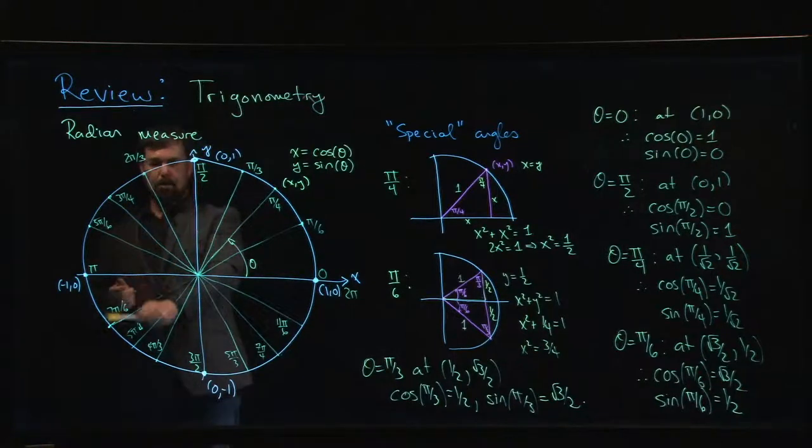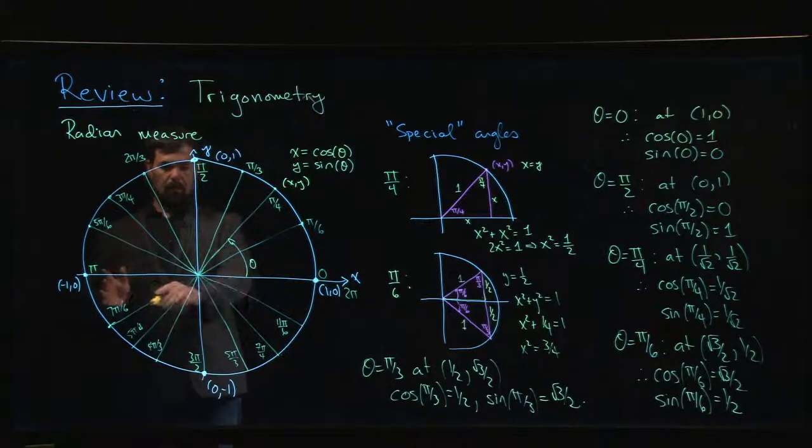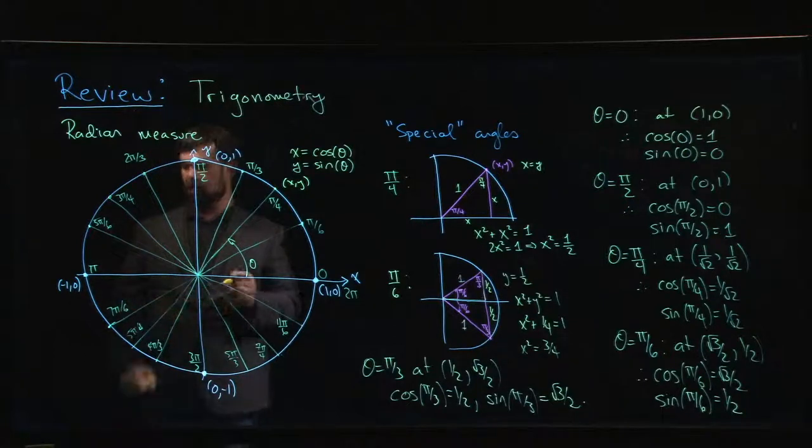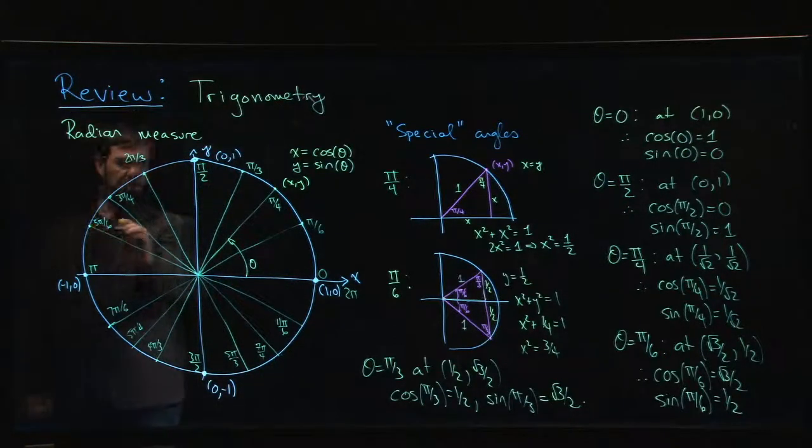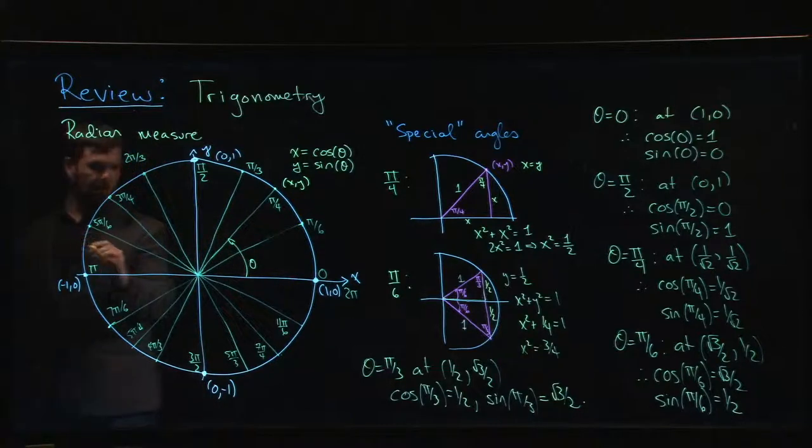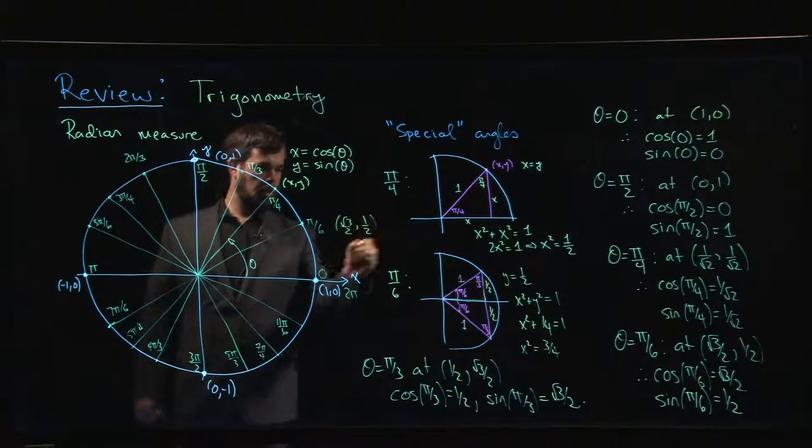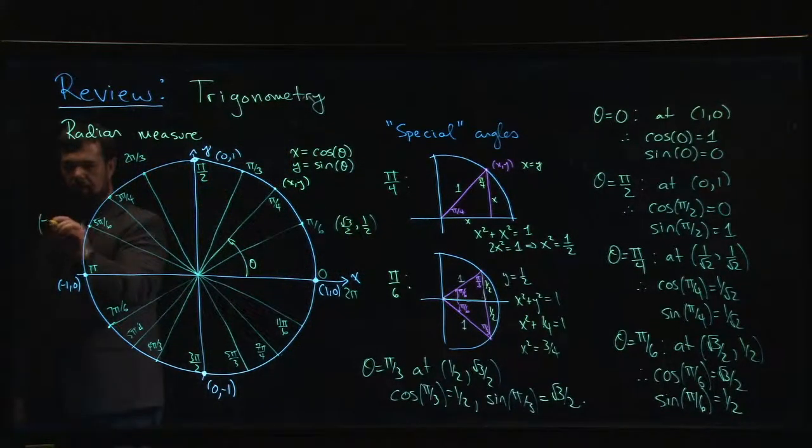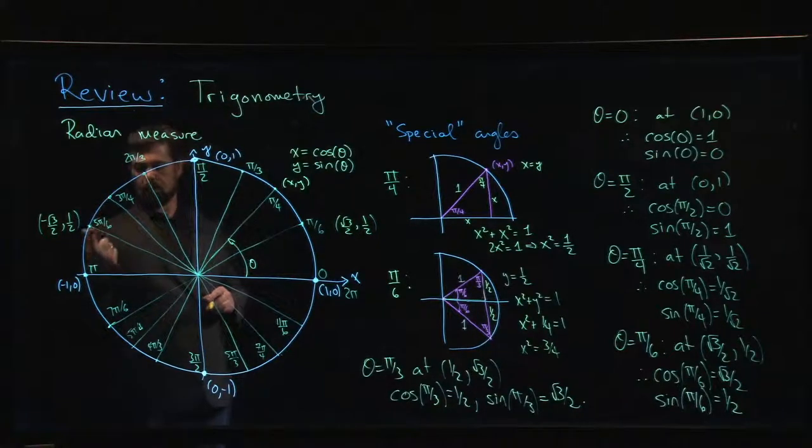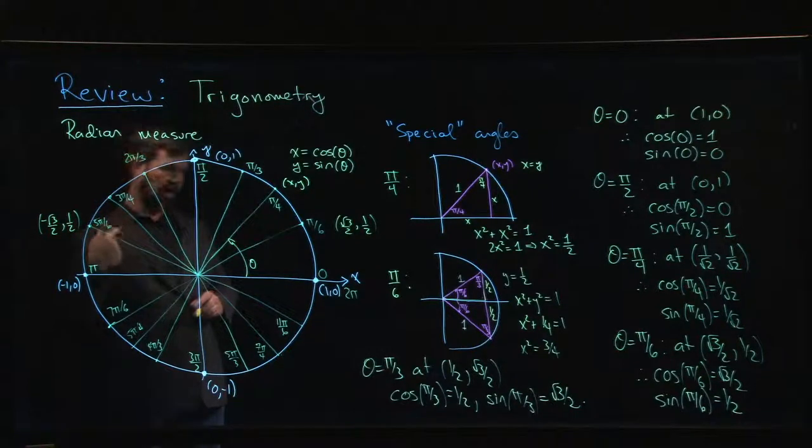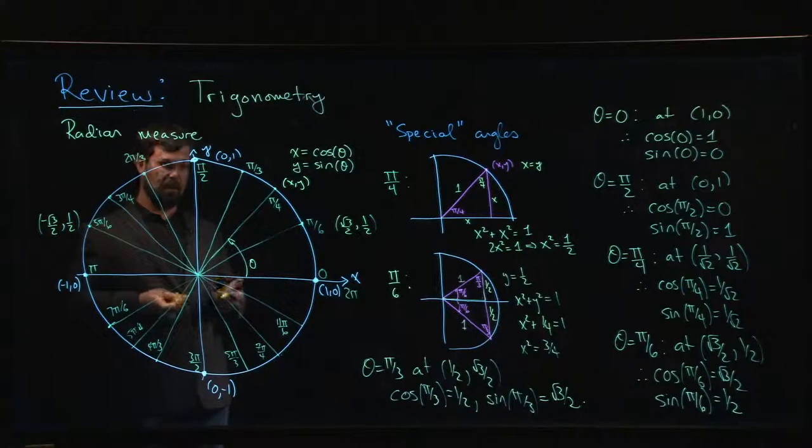Now, the reason that I didn't bother with anything else here is that all the other angles, they're related to the ones in the first quadrant through some sort of reflection. So if I go to something like 5 pi over 6, well, that is directly across from pi over 6. Y coordinates are the same. X coordinate is opposite. So if I know that this is at root 3 over 2 and 1 half, I immediately know that this is at minus root 3 over 2 and 1 half. And so if I'm doing cosine of 5 pi over 6, I know it's minus root 3 over 2. If I'm doing sine of 5 pi over 6, I know it's 1 half. I'm just reflecting across, so I change the sign of the x coordinate.